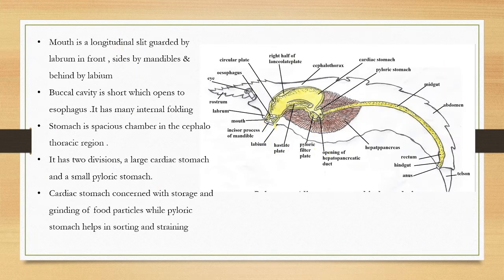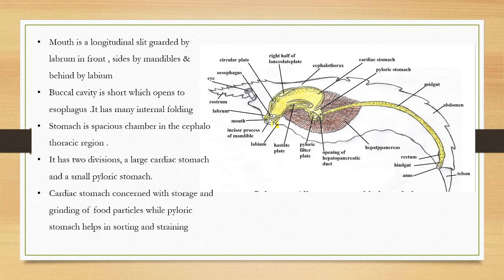The mouth is a longitudinal slit bordered by the labium, upper and lower lips, and sides by mandibles. The mandibles are used for cutting food particles. The mouth opens into a short buccal cavity which in turn opens into the esophagus, which has many internal foldings.